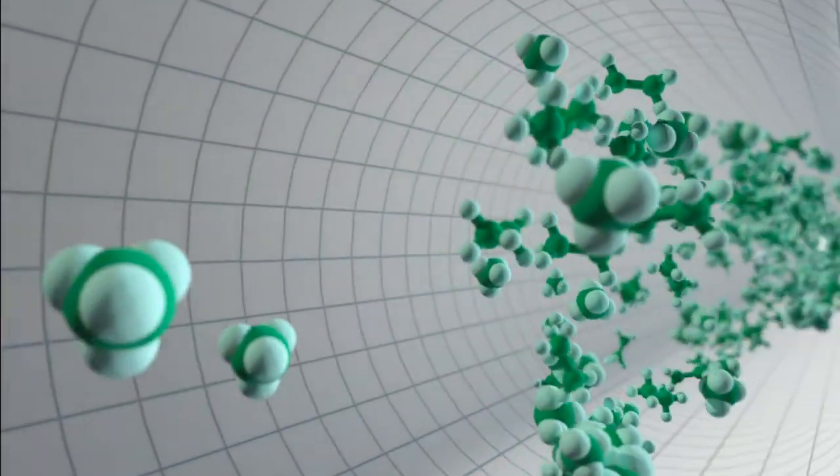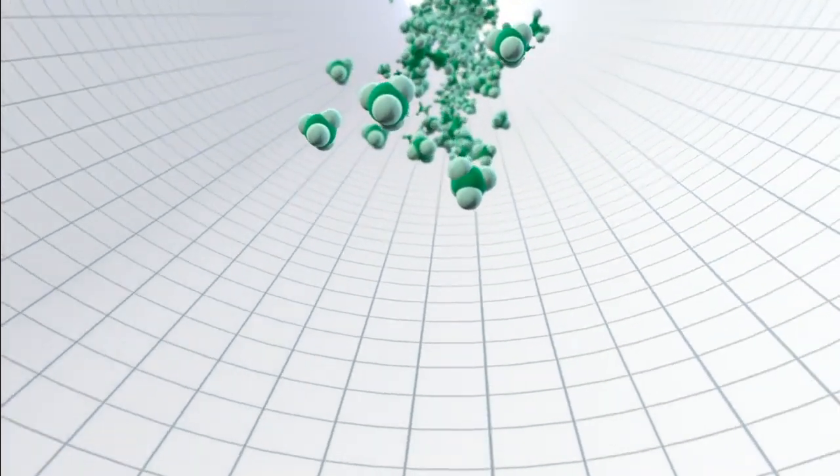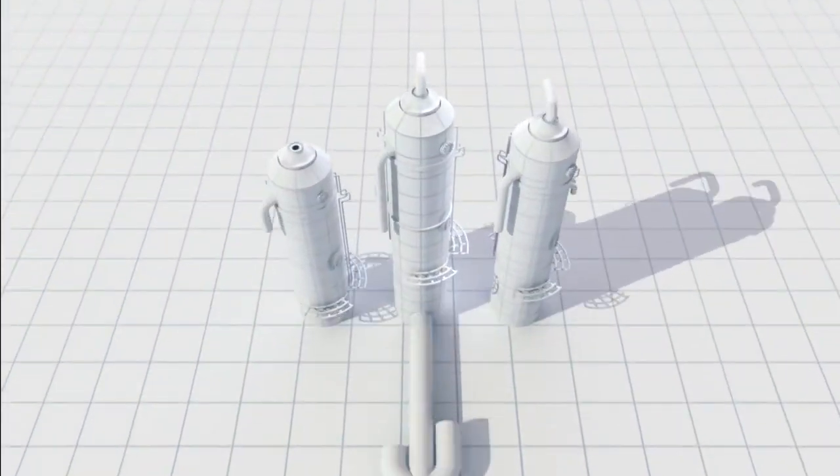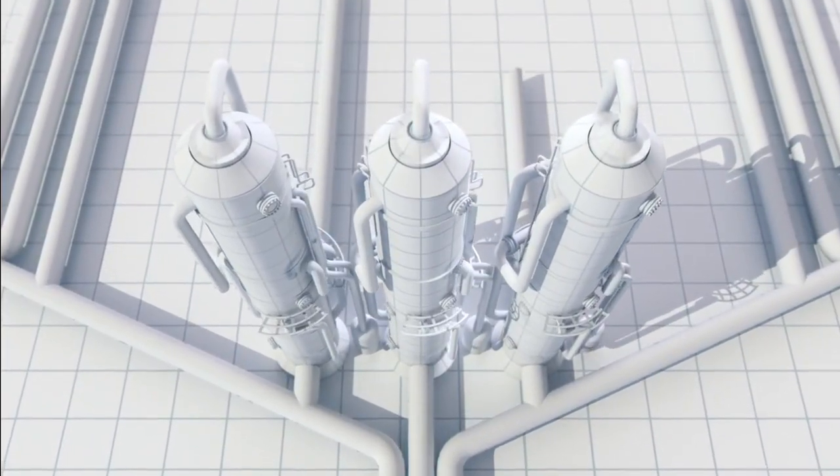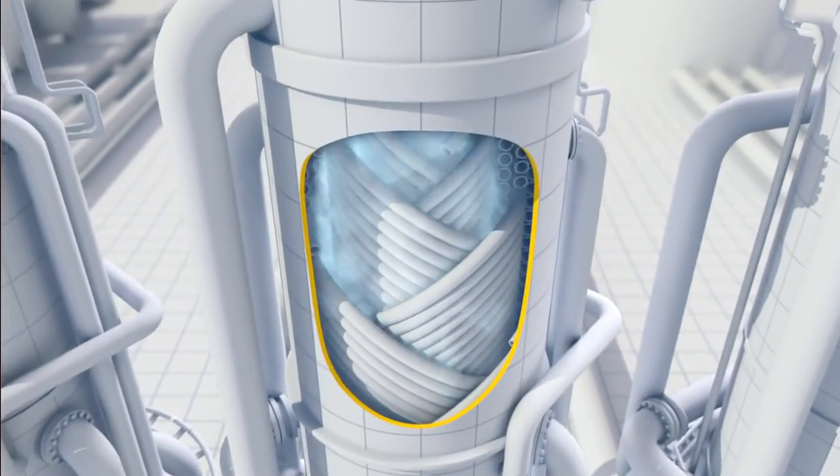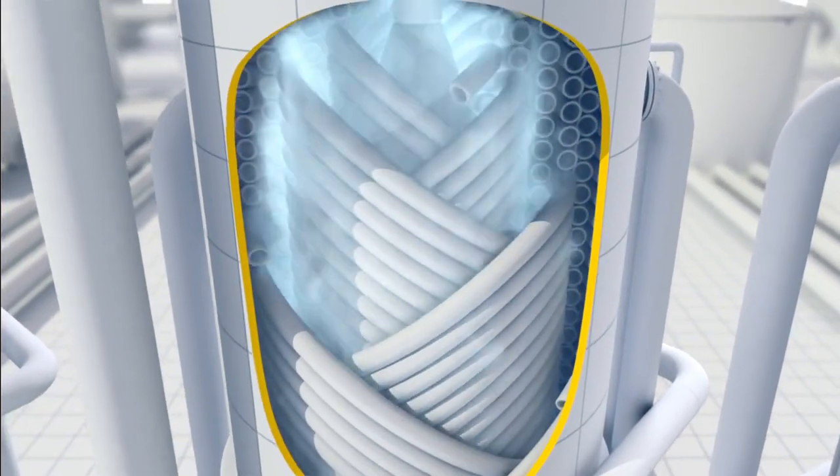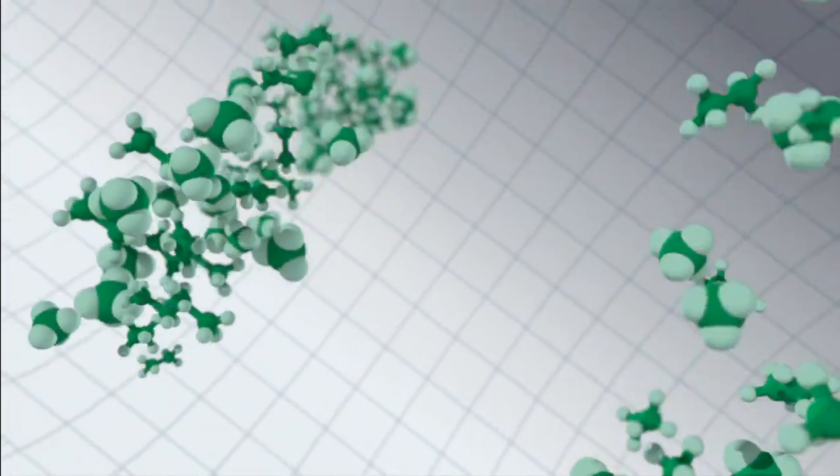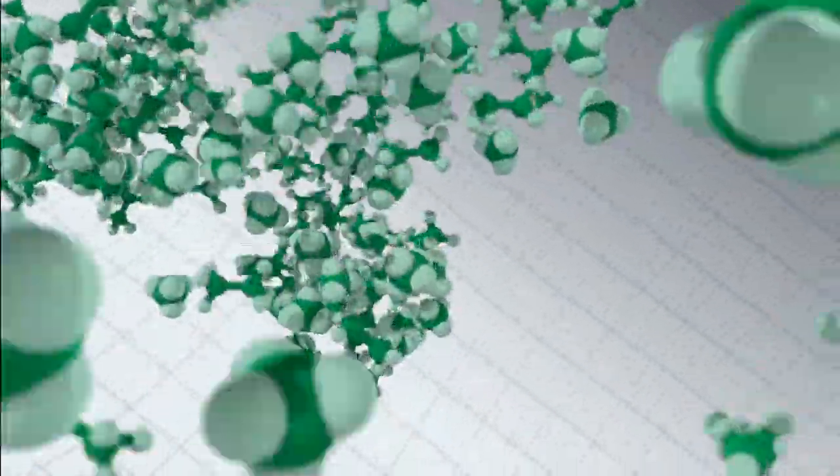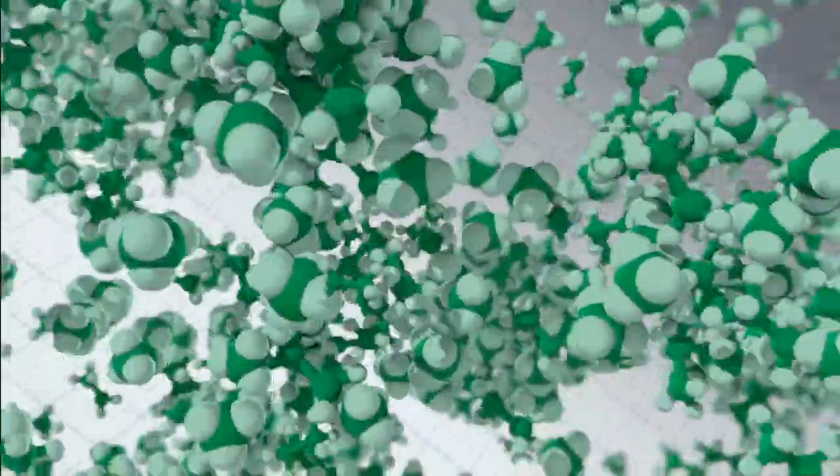Now the purified natural gas, methane with some ethane, is ready to be liquefied. This happens in heat exchangers. A coolant, chilled by giant refrigerators, absorbs the heat from the natural gas. It cools the gas to minus 162 degrees centigrade, shrinking its volume by 600 times.